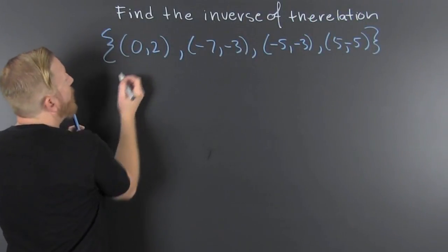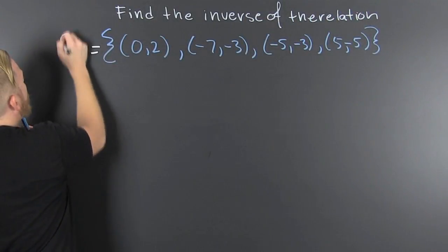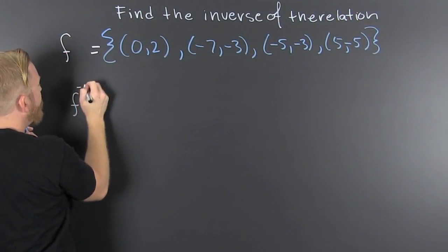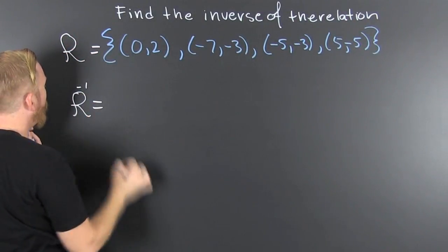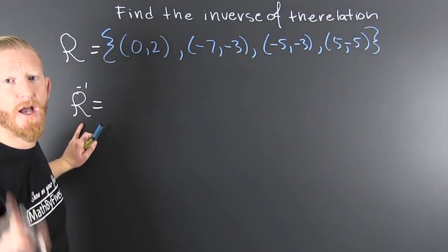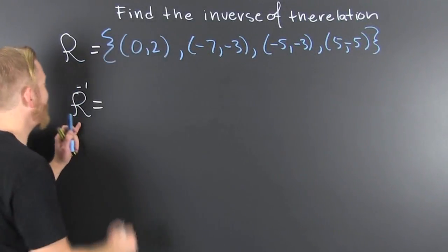And we go and we see if this is f, then f inverse. Let's use, oh yeah, we could be royal. We're finding the inverse of a relation.